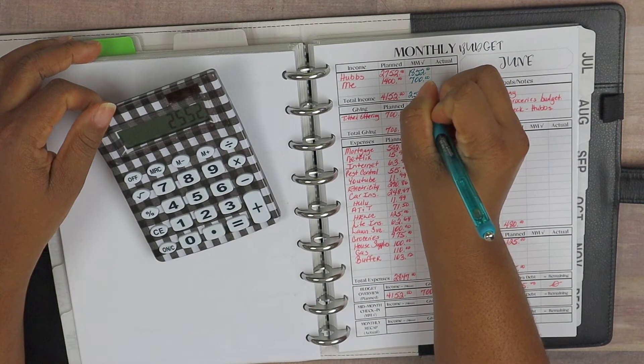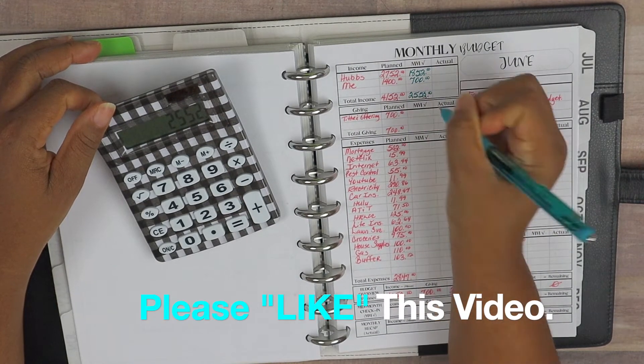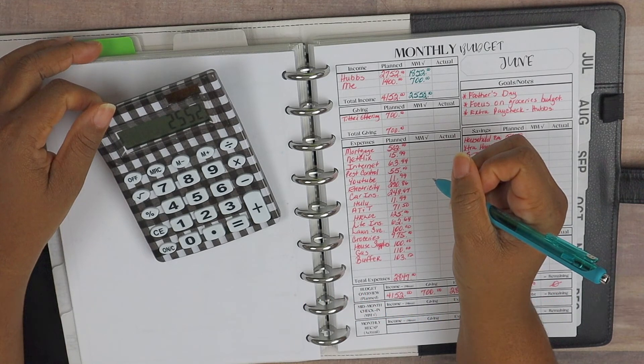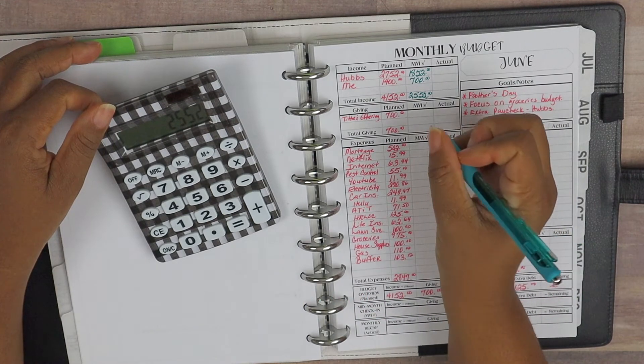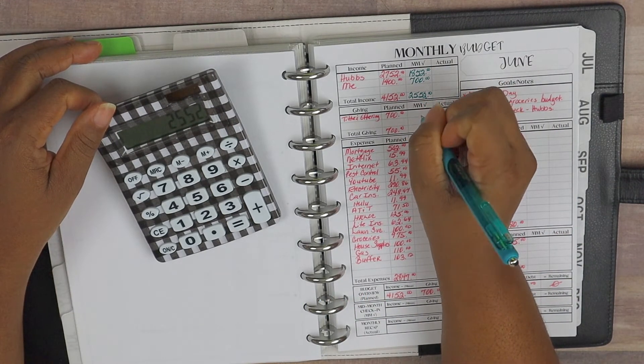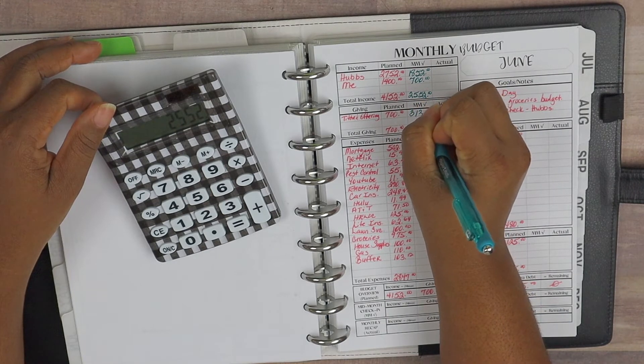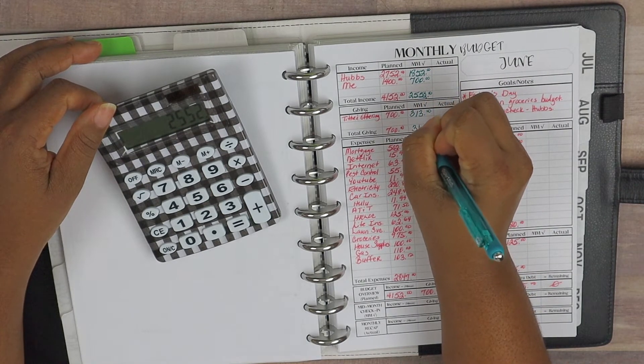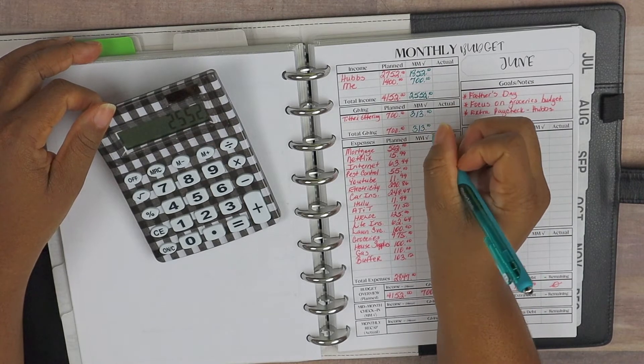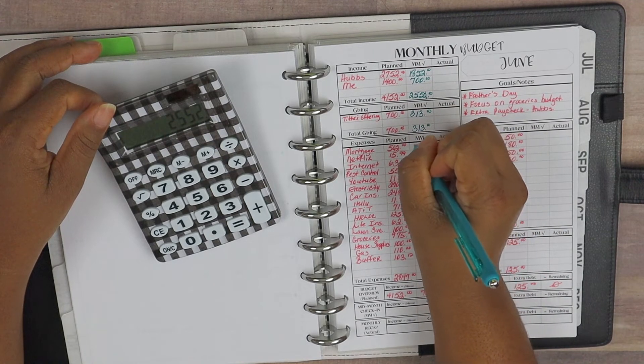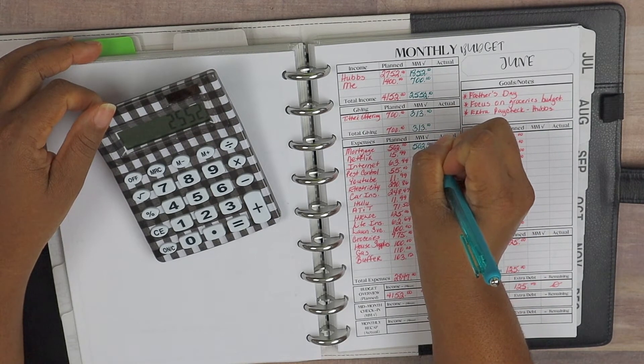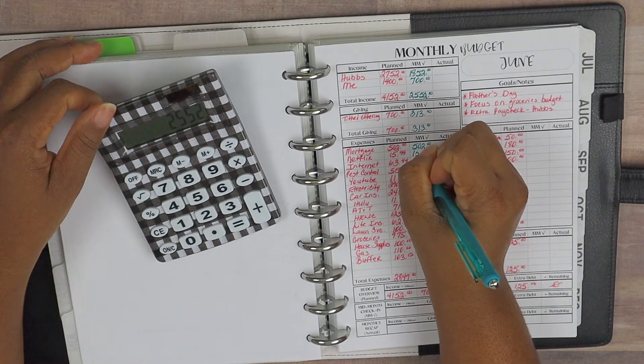And then for tithe and offering, we do tithe off our gross income and it actually came in at $313 thus far. And of course, our mortgage, $502, our Netflix and our internet, and our pest control was due this month—that's every other month. YouTube, taken care of, and